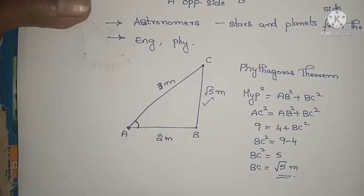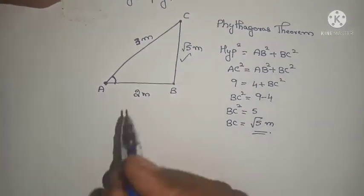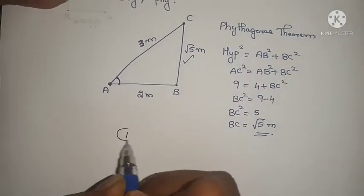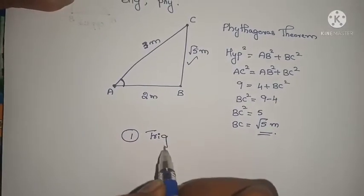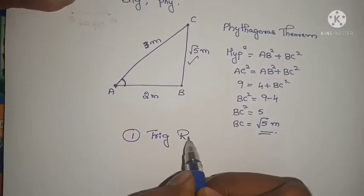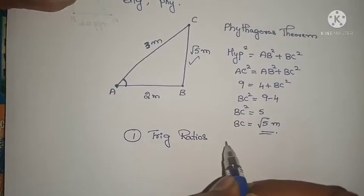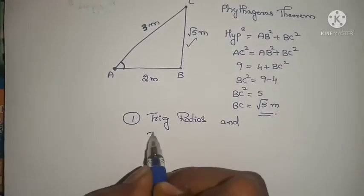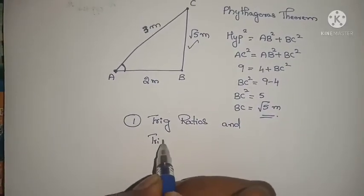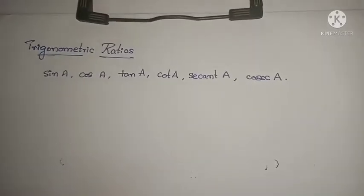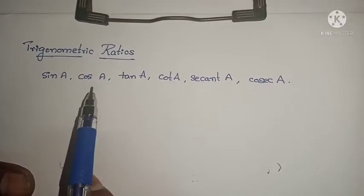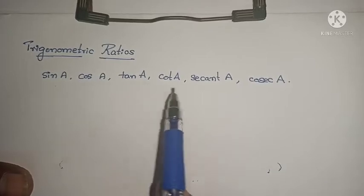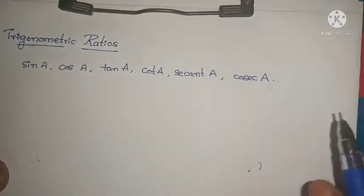Let us see some problems. In this chapter, we are going to study about two topics: trigonometric ratios and trigonometric identities. Let us see some introduction about trigonometric ratios. They are: sin A, cos A, tan A, cot A, secant A, and cosecant A.